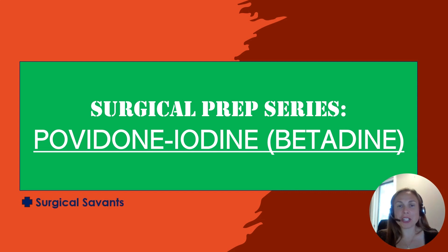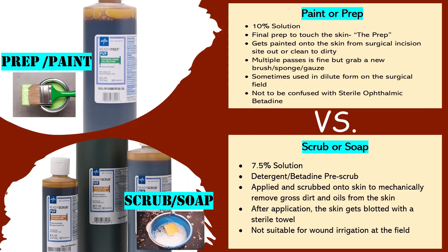Hi, everybody. This presentation is called povidone iodine, and it's part of a surgical prep series. Povidone iodine is frequently referred to as betadine in the operating room. If you're working in an operating room, it's important to know the difference between betadine paint or prep and betadine soap or scrub. We use these terms interchangeably, but you need to know the difference.